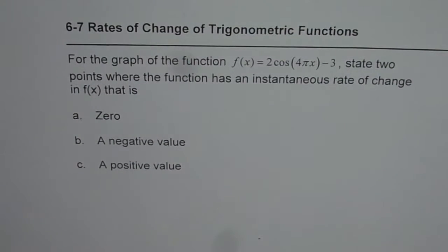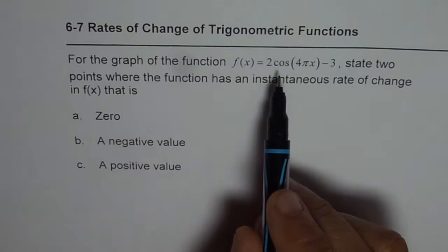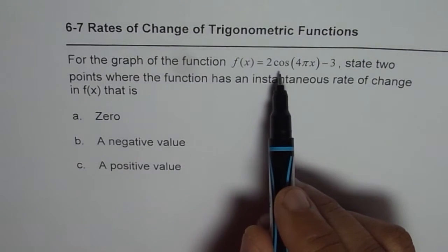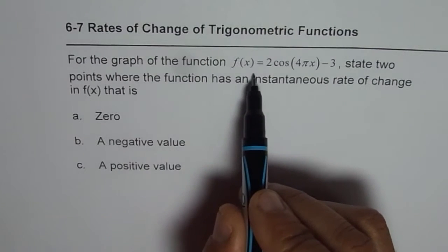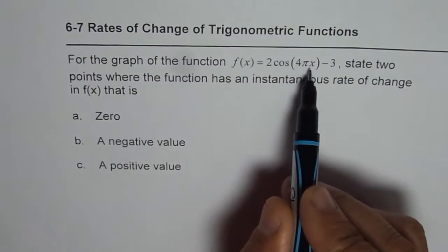We can quickly answer this question but first let us look into the function itself and also see how to sketch it. I would like you to take this opportunity to review unit 6 and get prepared for your test. So when you say f(x) equals 2 cosine 4πx minus 3,